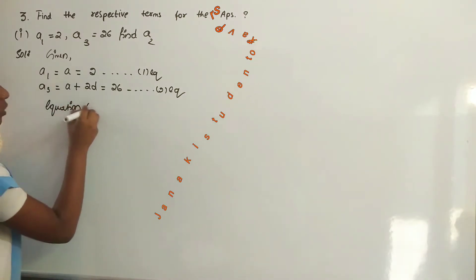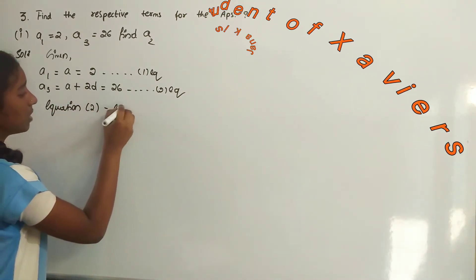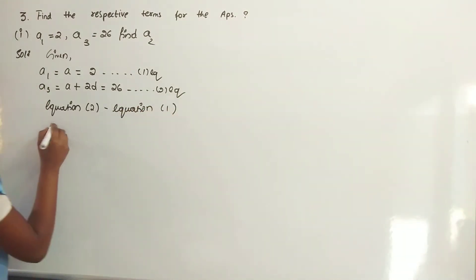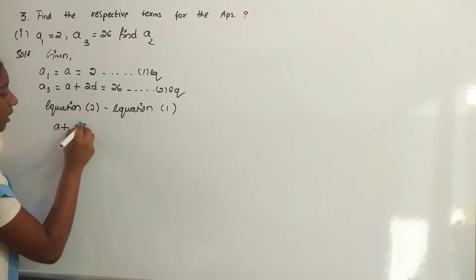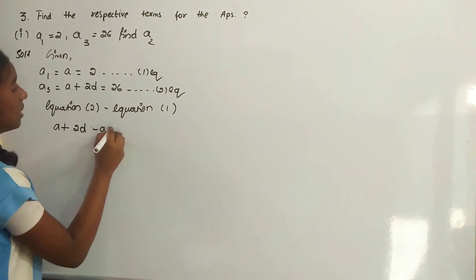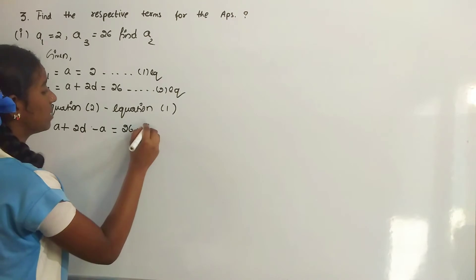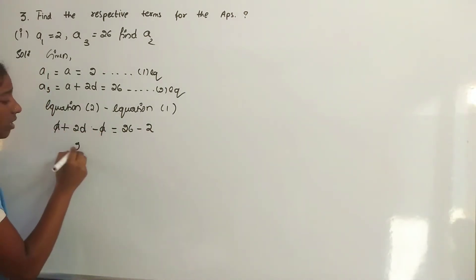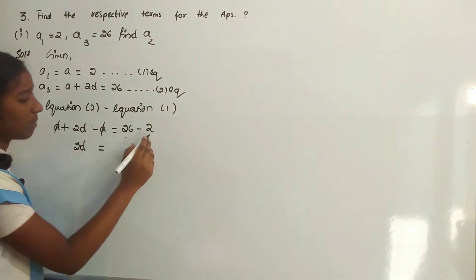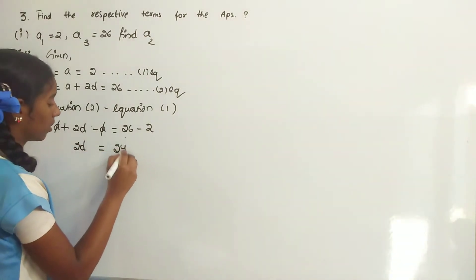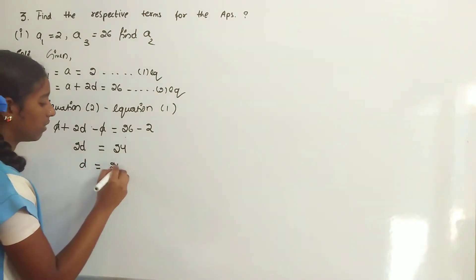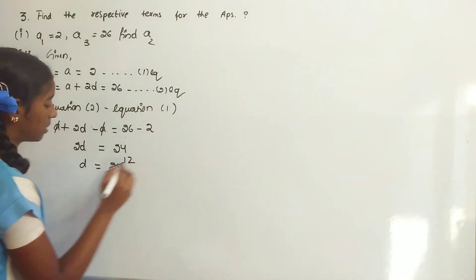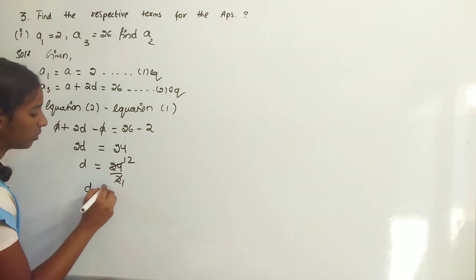Equation 2 minus equation 1: A plus 2D minus A is equal to 26 minus 2. Plus A and minus A gets cancelled. So 2D is equal to 24. D is equal to 24 by 2, which equals 12.